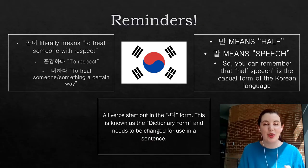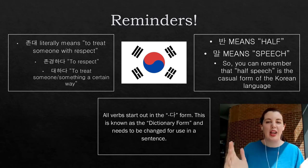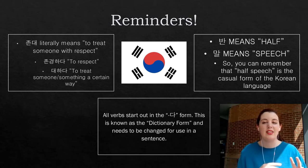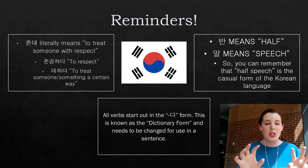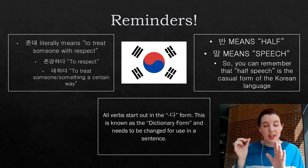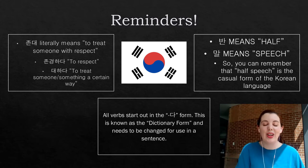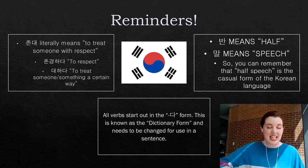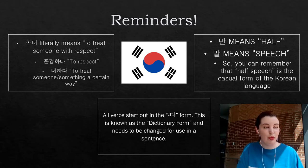Just a couple reminders for you guys. Remember that there are two types, two ways of speech in Korean. There's 존댓말, which is the formal form, and then there's 반말, which is half speech or the casual form. I left a couple reminders up there for you. Also, all verbs and adjectives start out in the 다 form — this is the dictionary form — and we never really use this in a sentence. So we're always going to want to drop the 다 when conjugating verb forms.